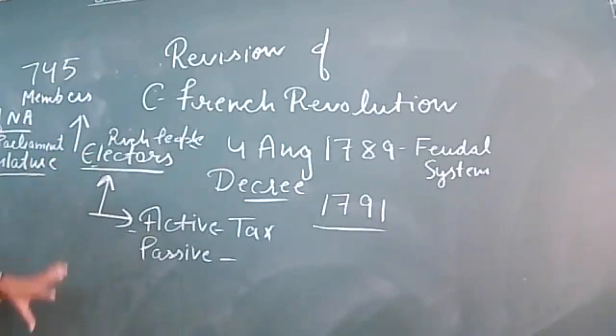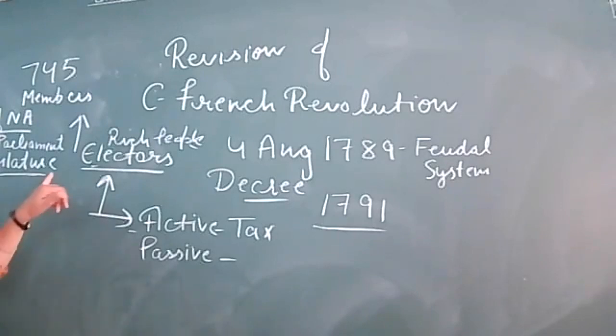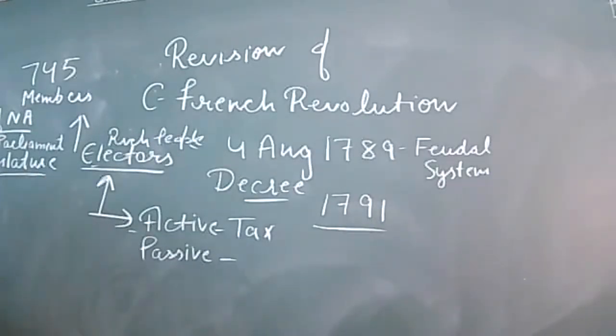If the National Assembly was the legislature, who was the executive? If you remember the spirit of the laws by Montesquieu, the government is divided into parts: the legislature, the executive, and the judiciary.